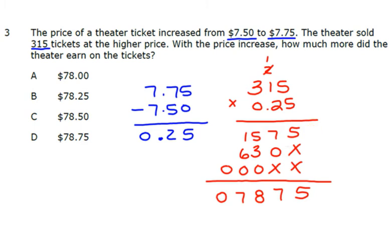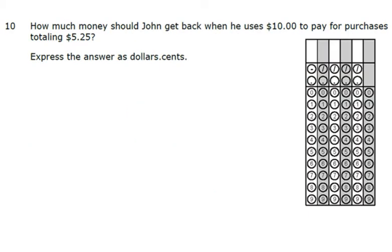Now we need to figure out your decimal point. Go back to the original problem. How many numbers are after the decimal? No decimal point in 315. Two spots on the decimal there. So we're going to start from the back and go one and two. So they made an extra $78.75. All right, let's take a look at the next question.